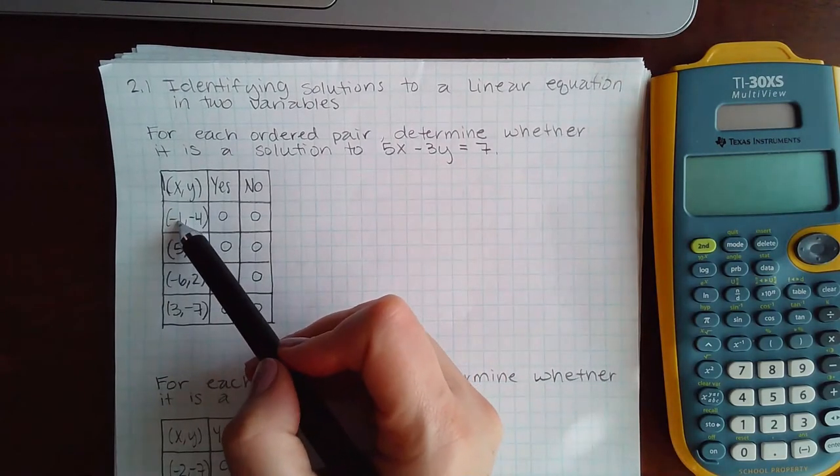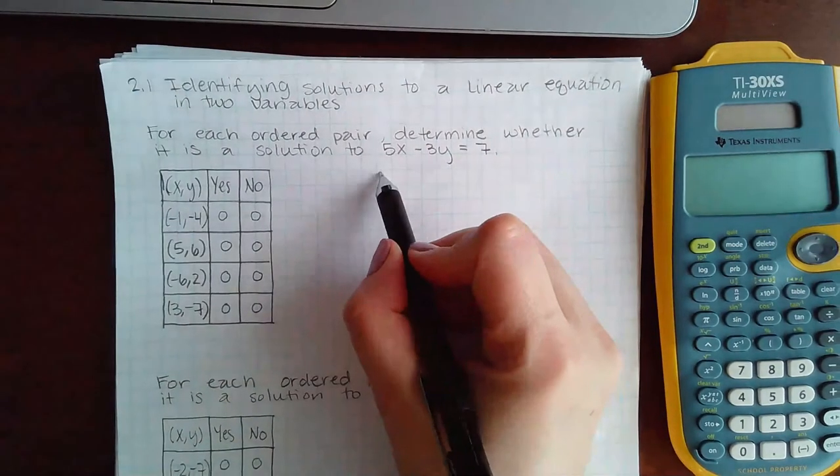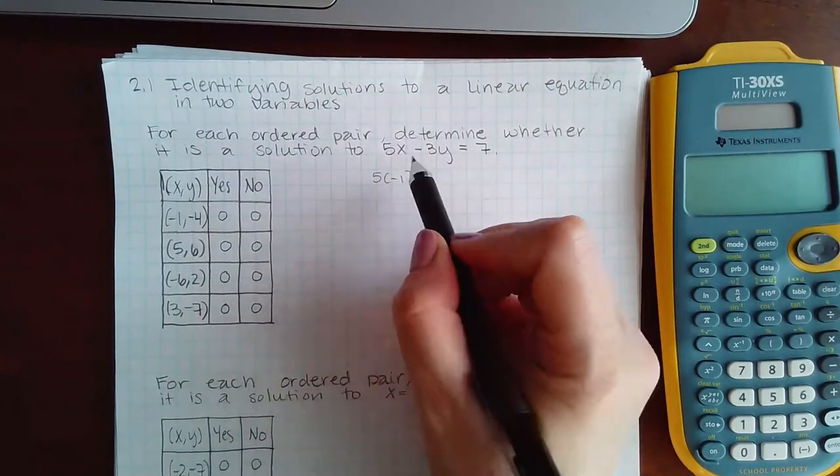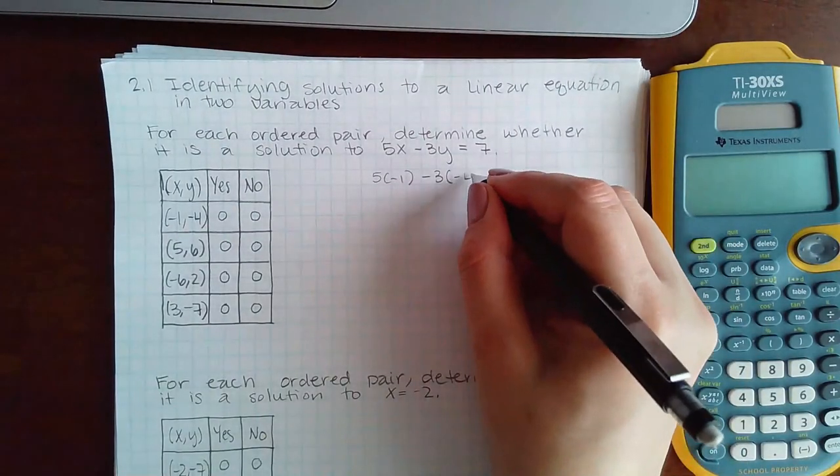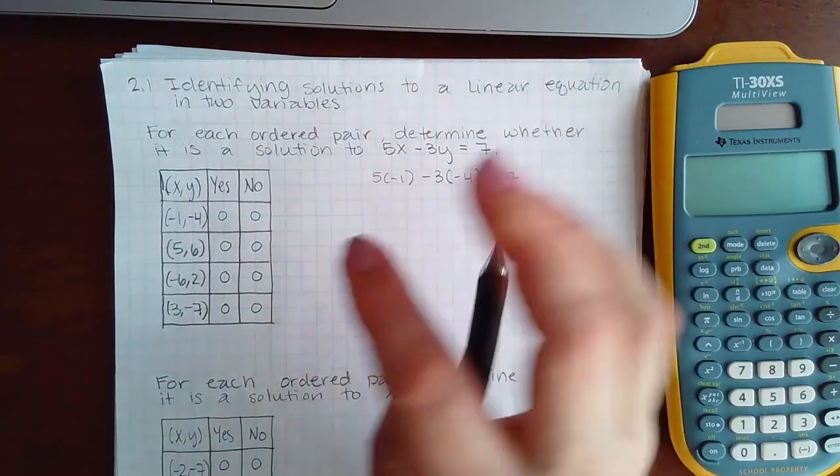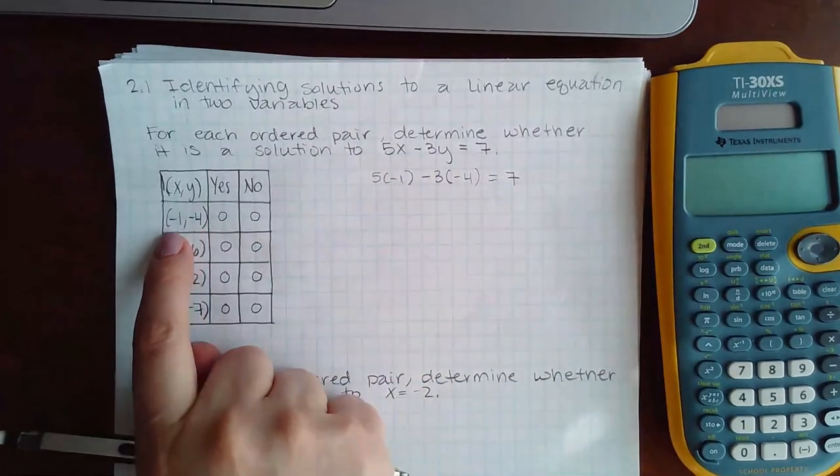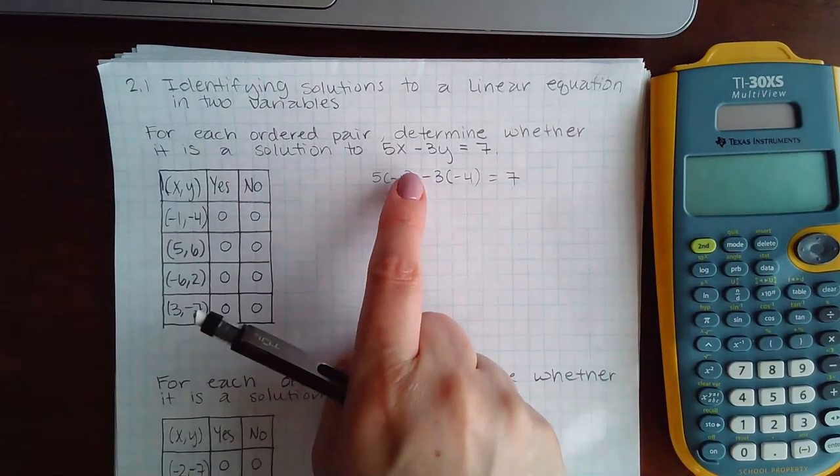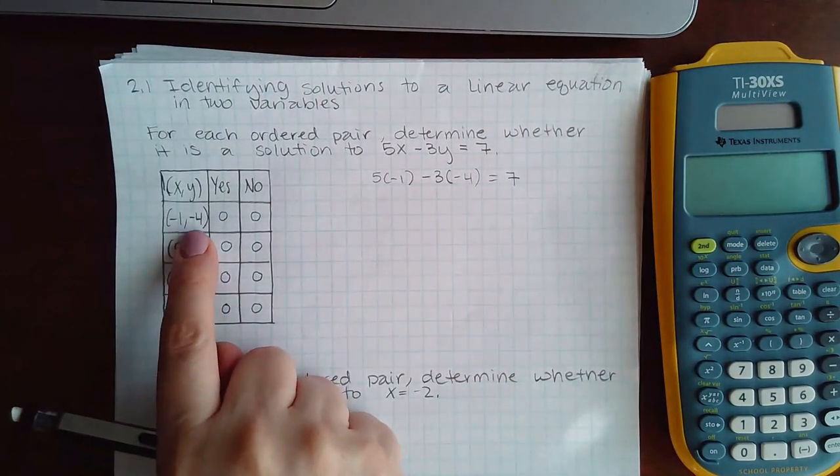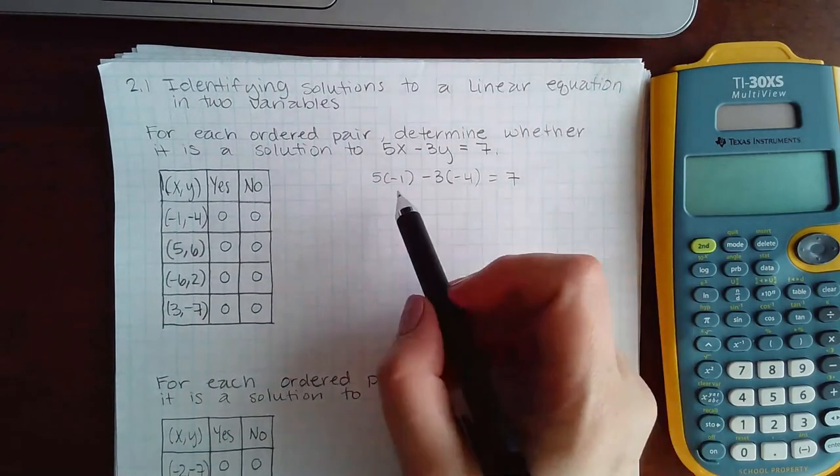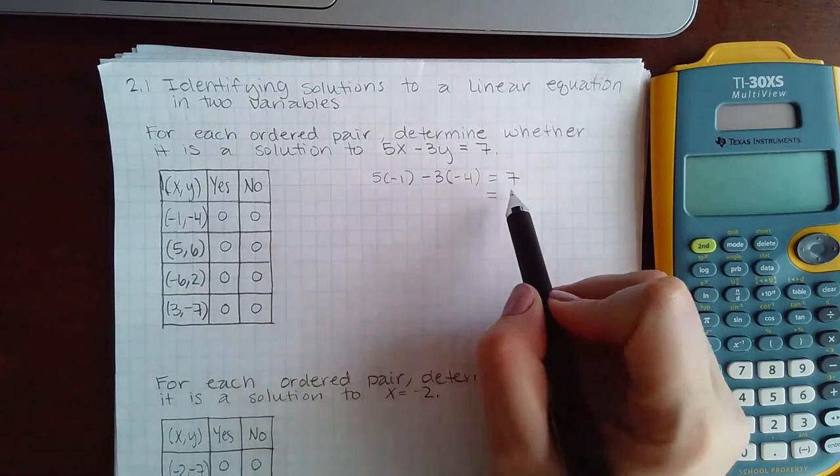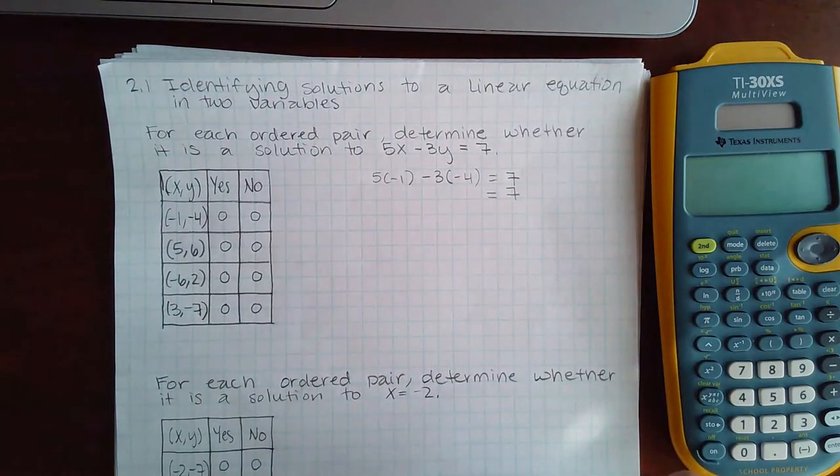So my x-coordinate is the first value, which means I should be plugging in one first. And then the second coordinate is the y-value. The biggest thing is making sure you plug in the x-value where the x is, and then you're plugging in the y-value where the y is.